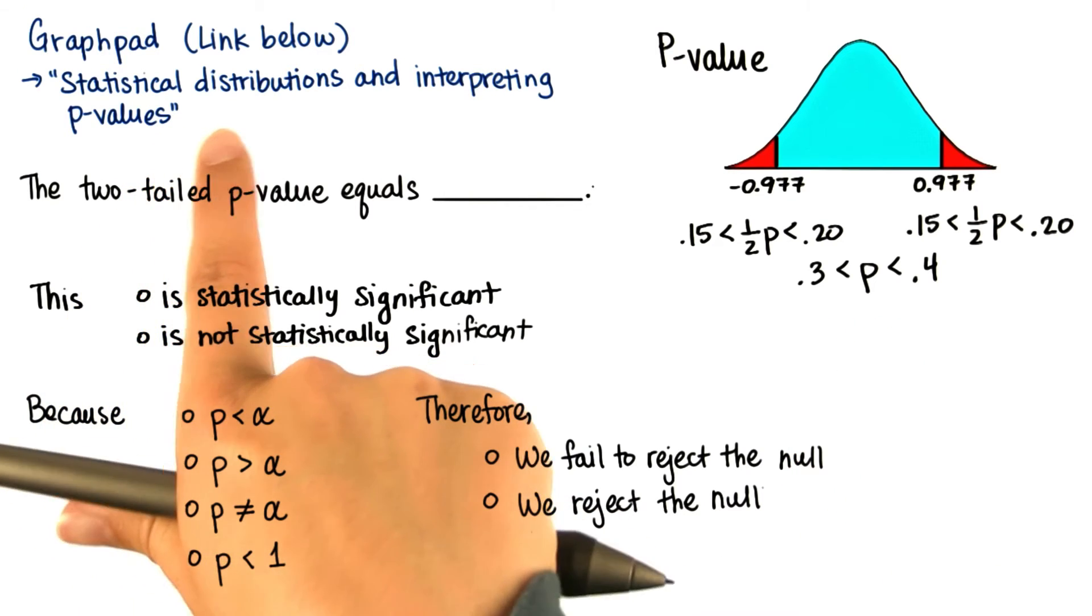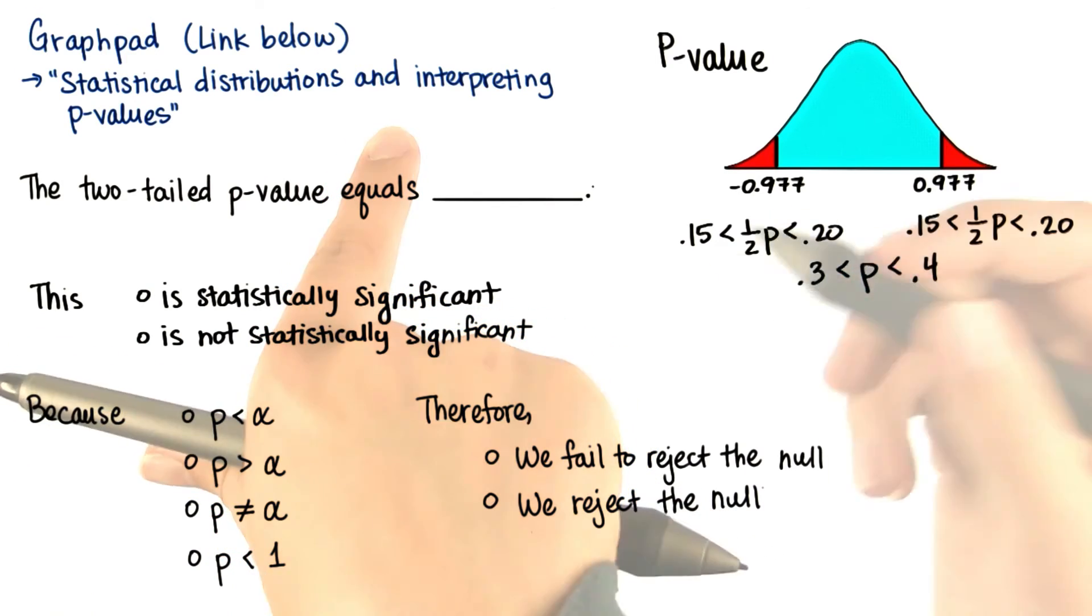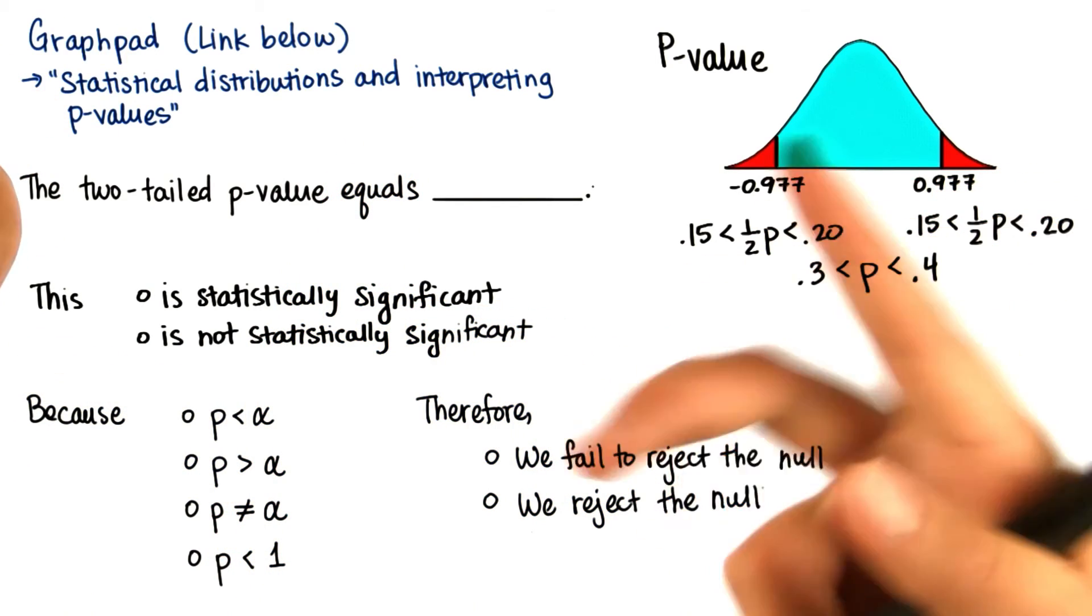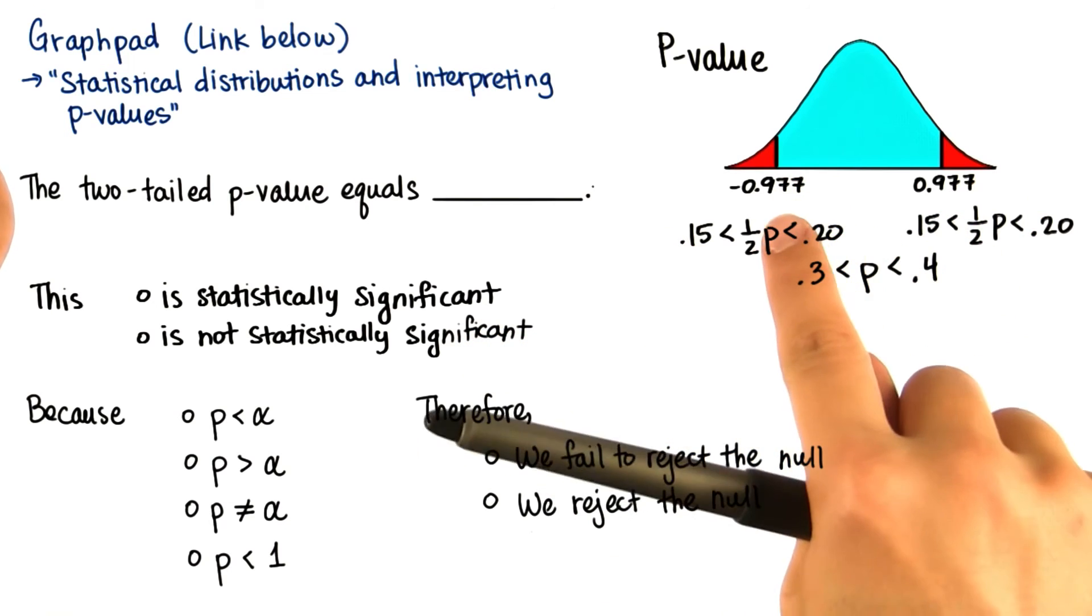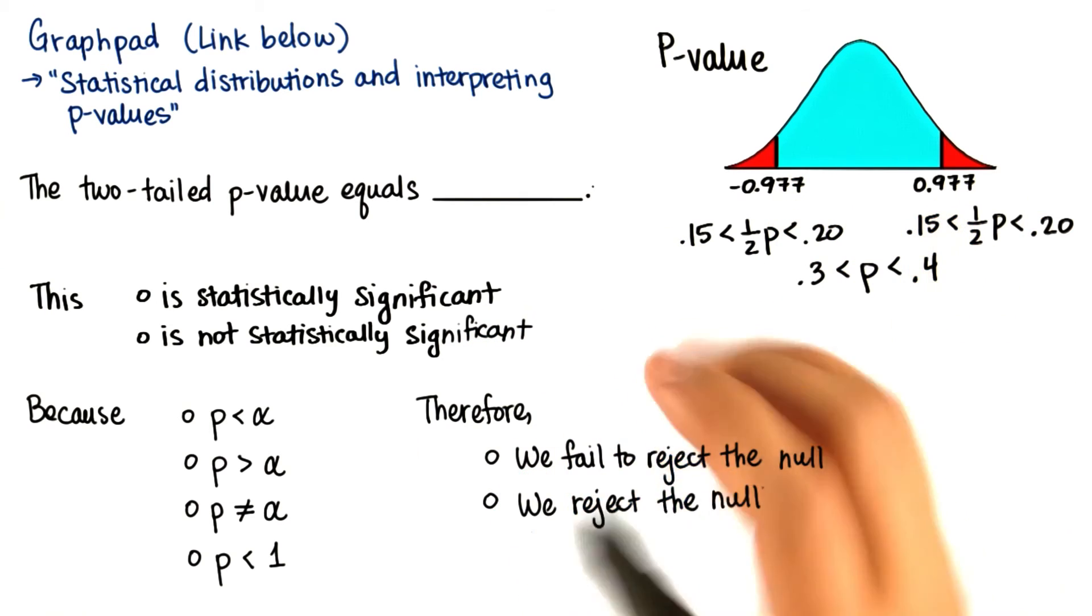Navigate to Statistical Distributions and Interpreting P-Values, and then based on the fact that we're doing a two-tailed test, and we know our t test statistic, figure out the rest.